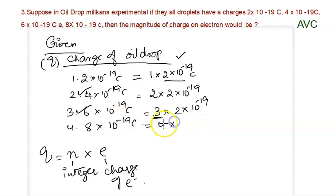In a similar way, if we multiply the smallest charge by integer 4, we get 8. From these observations, from these values,